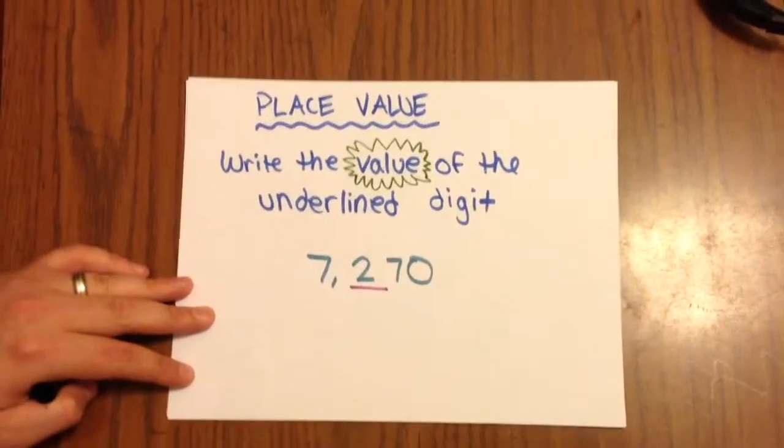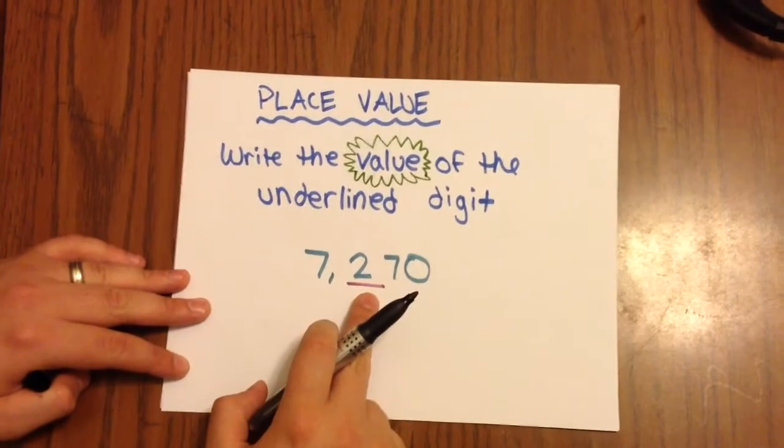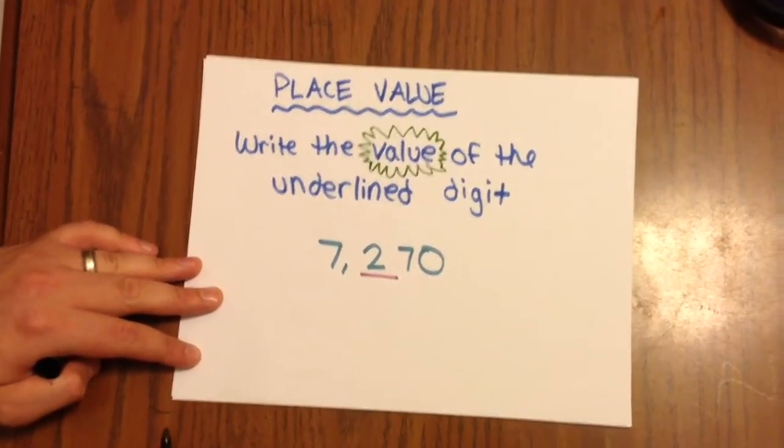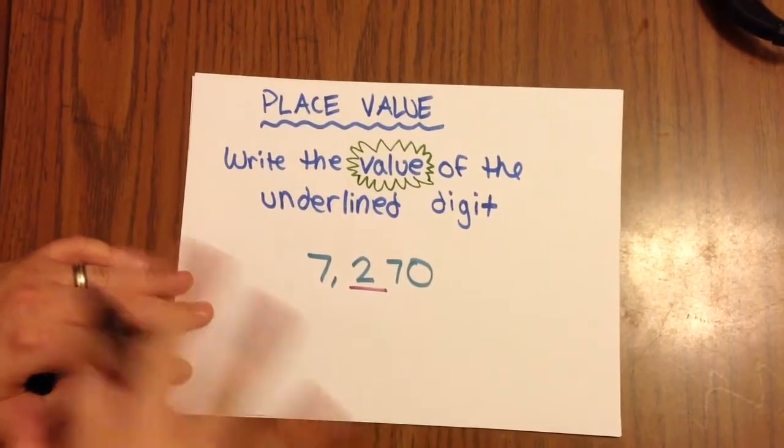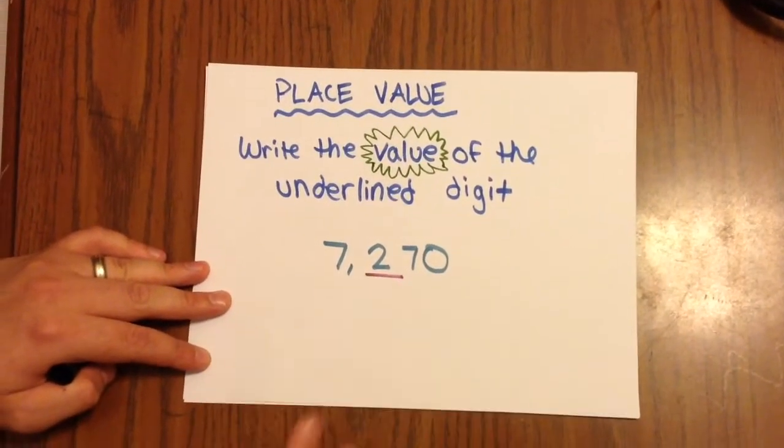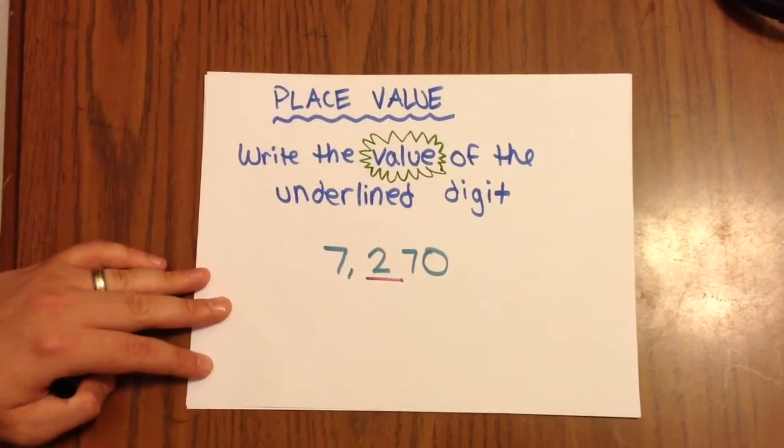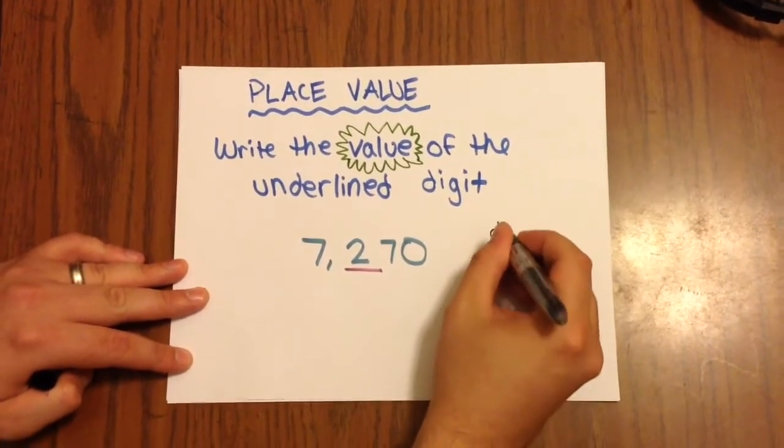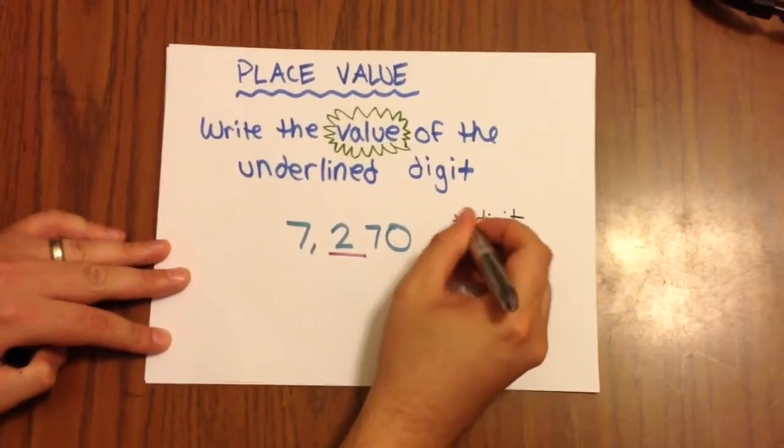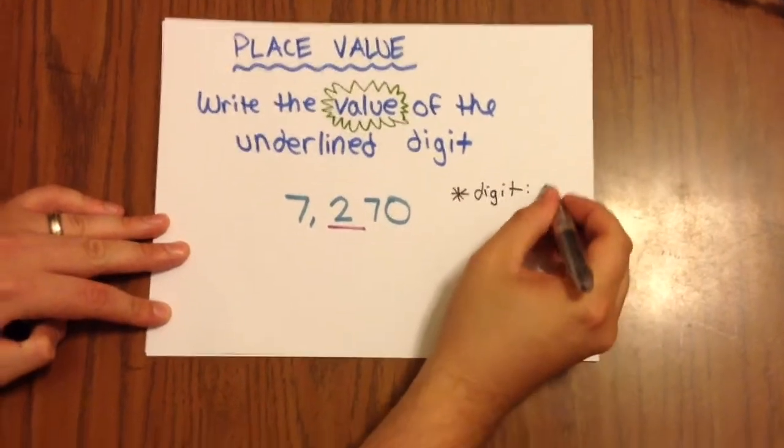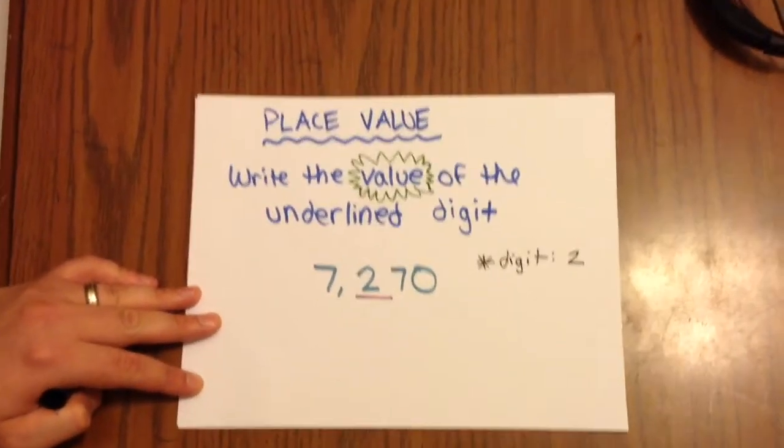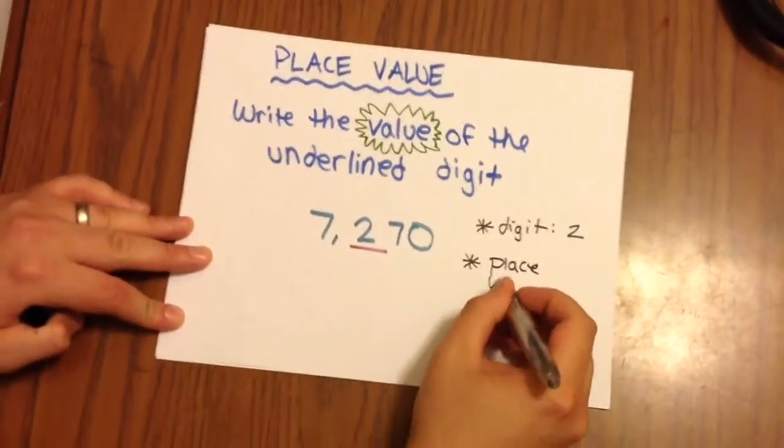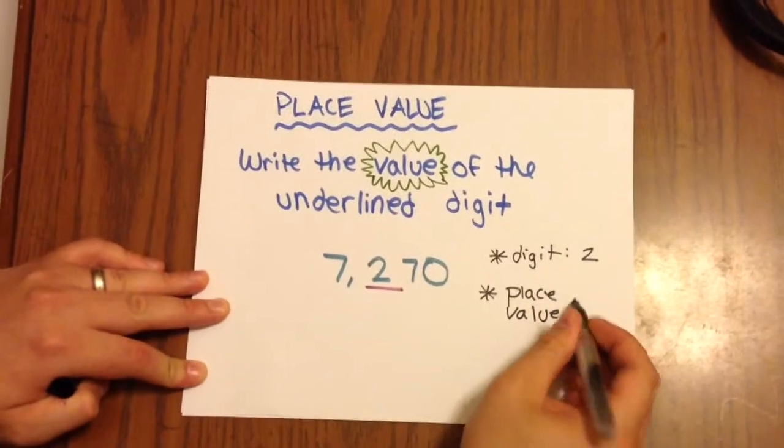So the example we have here is 7,270 and the digit 2 is underlined here. So there's a couple ways that we could go about figuring out what the value of this 2 is. And we really need two key pieces of information here. We need to know the digit that we're working with. And in this case, the digit is 2. And then we also need to know the place value of that digit.